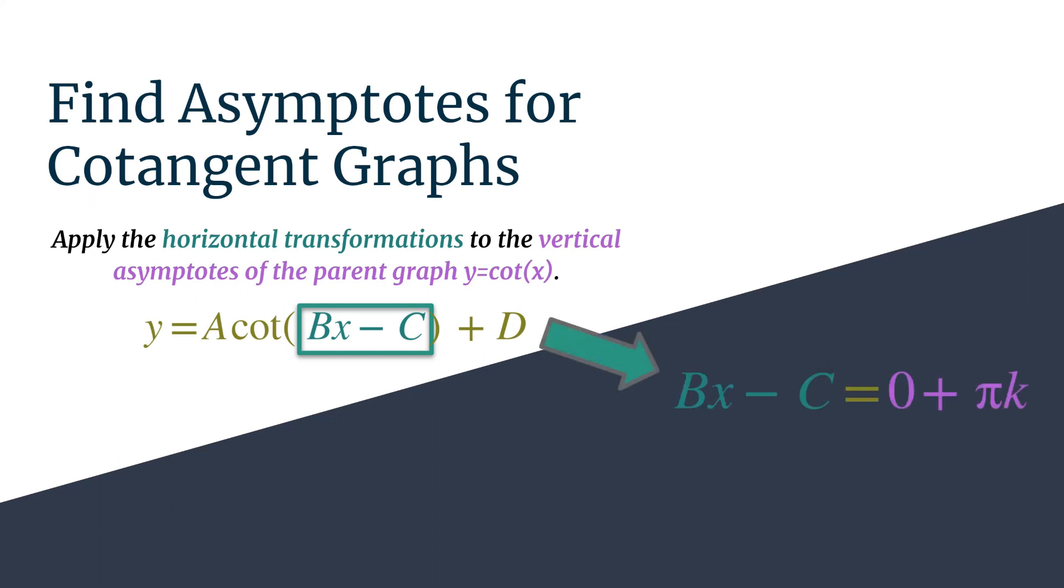All you have to do is set those two things equal to each other and then solve for x, and you'll get an equation that will give you every single asymptote for your specific graph or equation. That k is an integer, and depending on what integer you substitute in, you'll get a different asymptote along the way. Let's look at a specific example.